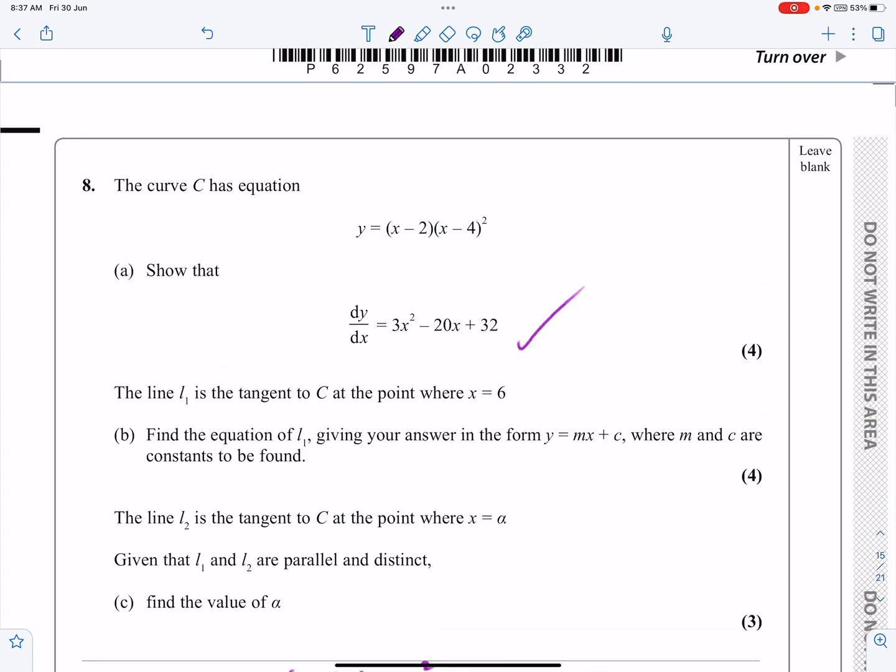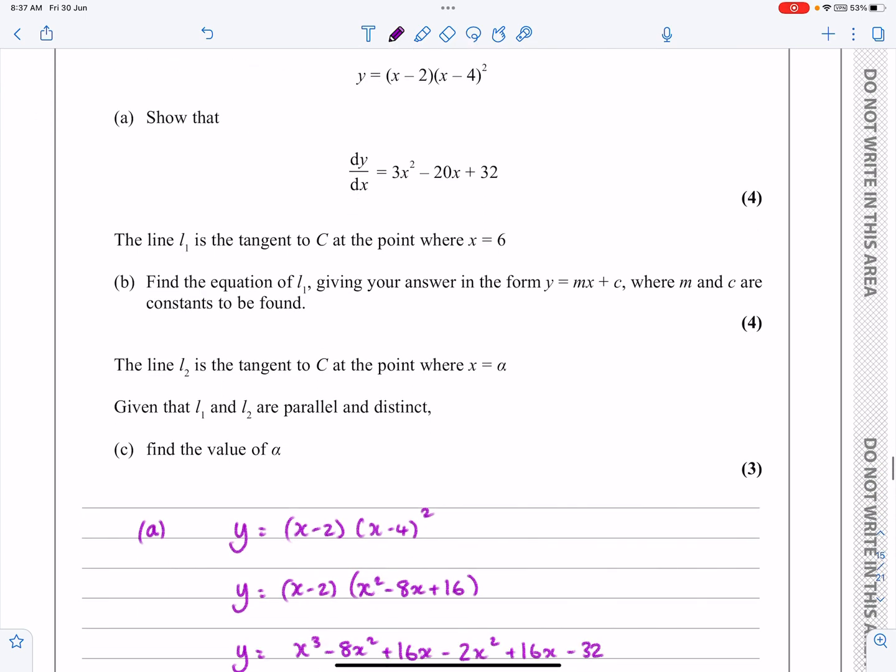So good stuff. Part A done. So part B says the line L1 is a tangent at the point where x equals 6. Can we give the equation of the line? And they want it in that sort of format.